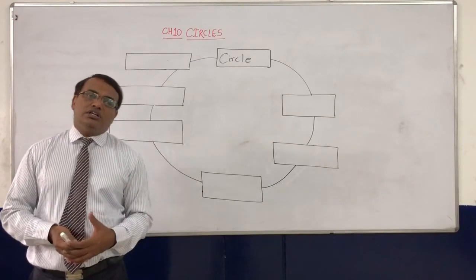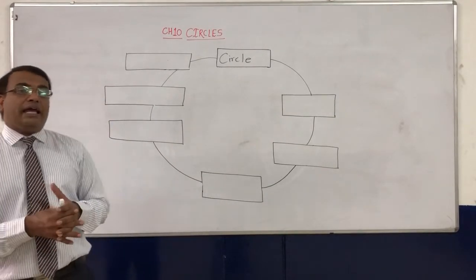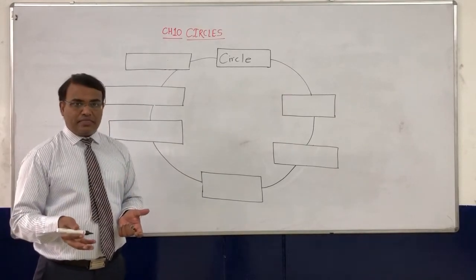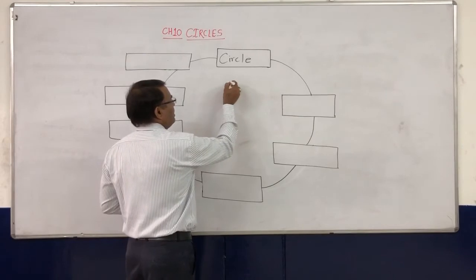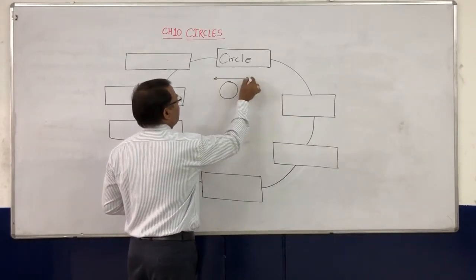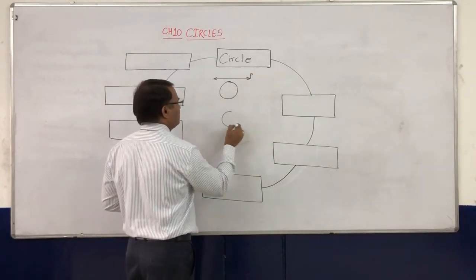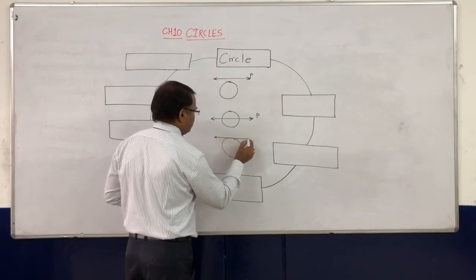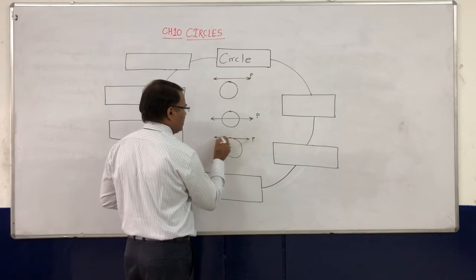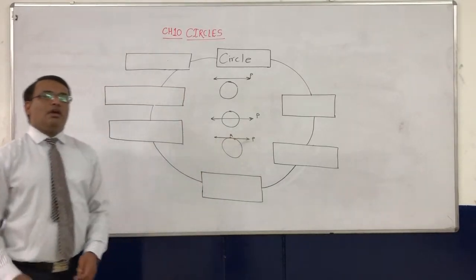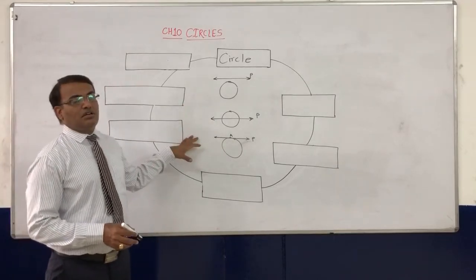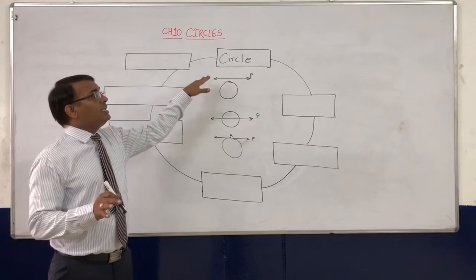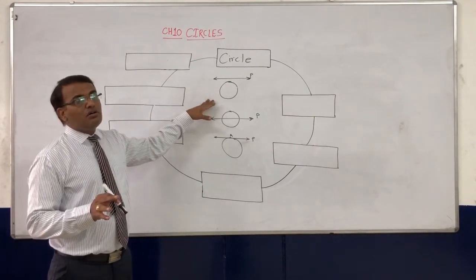Now in this topic, what we are going to learn is about the circle and a line which will be intersecting a circle. There are about three different cases. In the first case, the circle and the line are not meeting each other — not intersecting each other — so there is no common point. In the second case, the line intersects the circle and meets it at two different points, A and B.